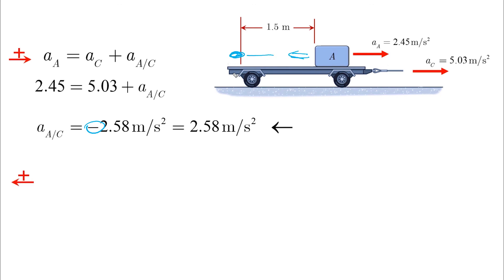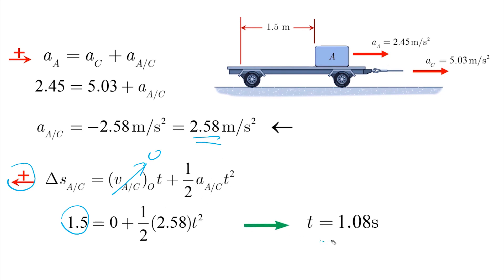Finally, we use the constant acceleration equation, which we just mentioned, and we assume this side as the positive. So, we have delta S as 1.5 positive. Initial velocity is equal to 0. Acceleration is just found. And from there, we find the time, which is 1.08 seconds.